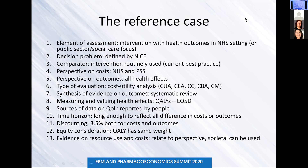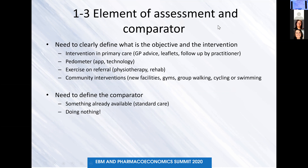There are different steps in developing a guideline. The first is to clearly define the objective and the intervention — whether it is a primary care intervention, an application, a technology, exercises, or community interventions. Then we need to define the comparator: something already available, such as the standard of care, or in some cases doing nothing, for example when introducing a new screening intervention or a vaccination.